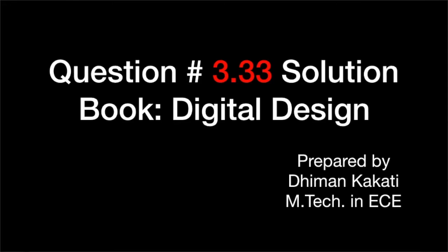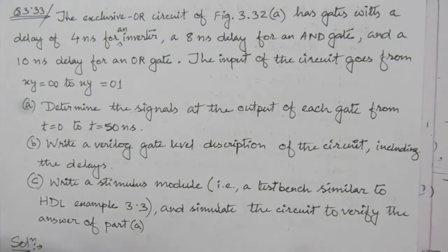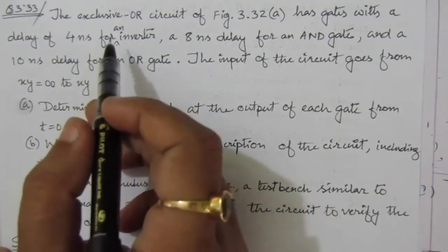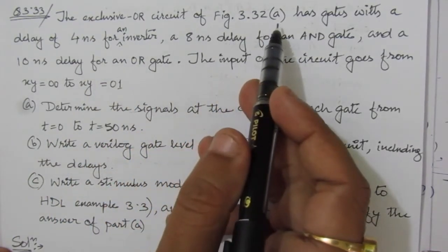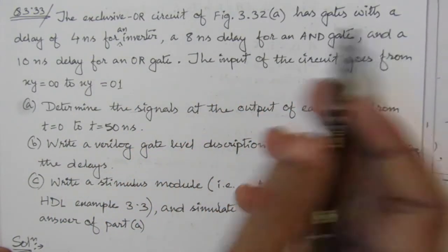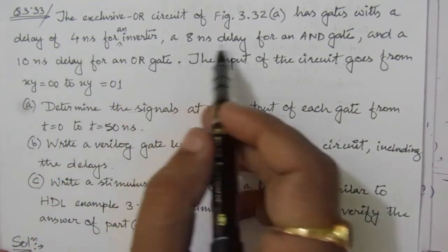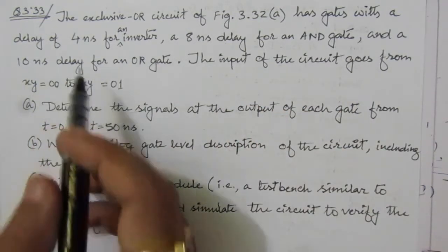Dear students, I welcome you all to this problem solution series in digital electronics. I am solving problems from the book 'Digital Design' by Morris Mano and Michael Celetti. In this video I am solving problem number 3.33 from chapter three. The problem is: the exclusive-OR circuit of figure 3.32a has gates with a delay of 4 nanoseconds for an inverter, 8 nanoseconds for an AND gate, and 10 nanoseconds for an OR gate.